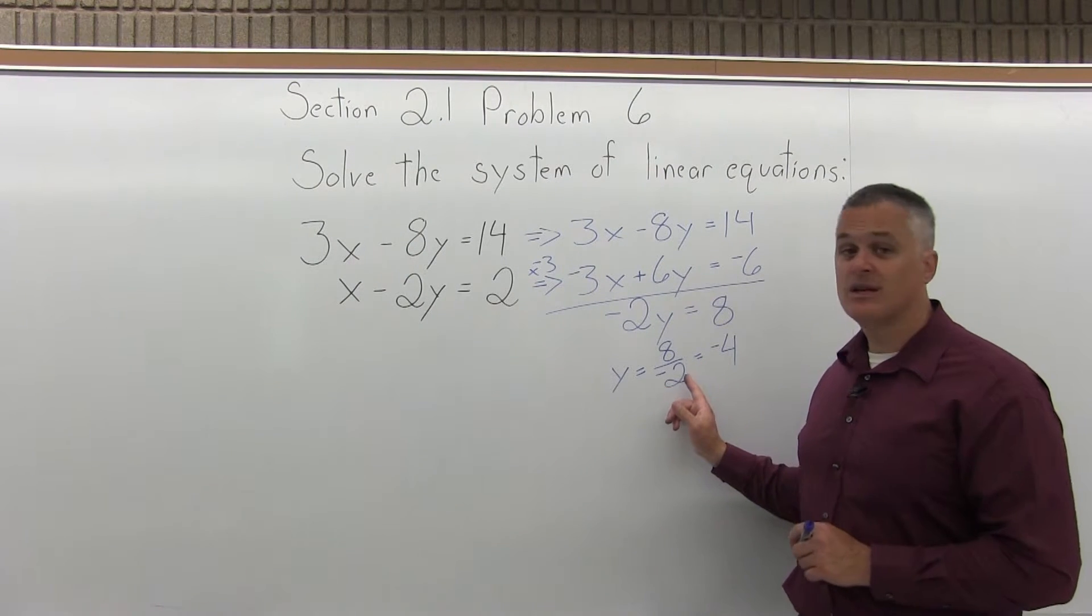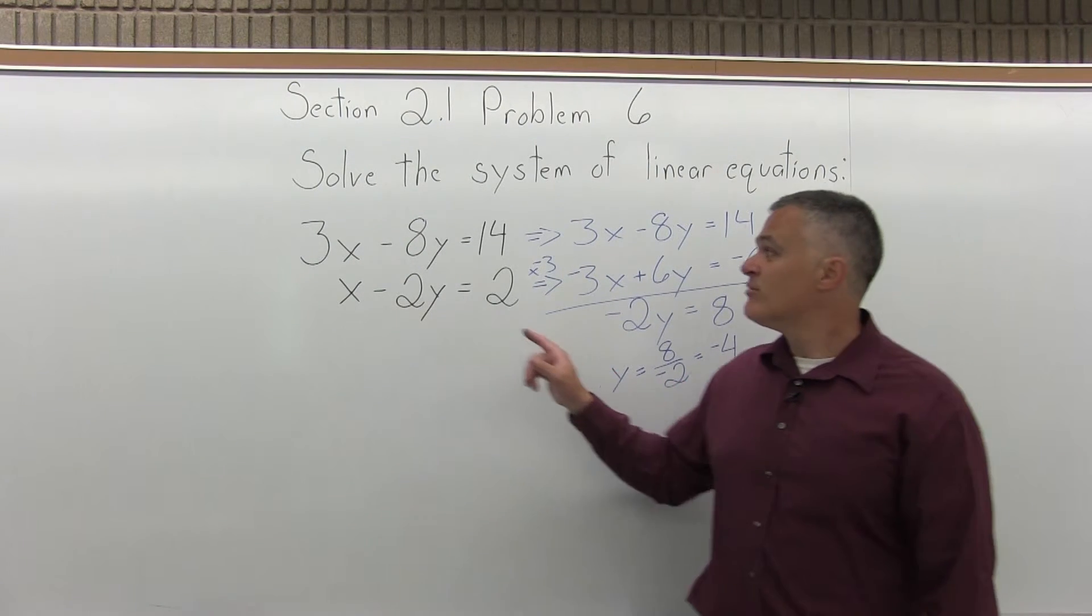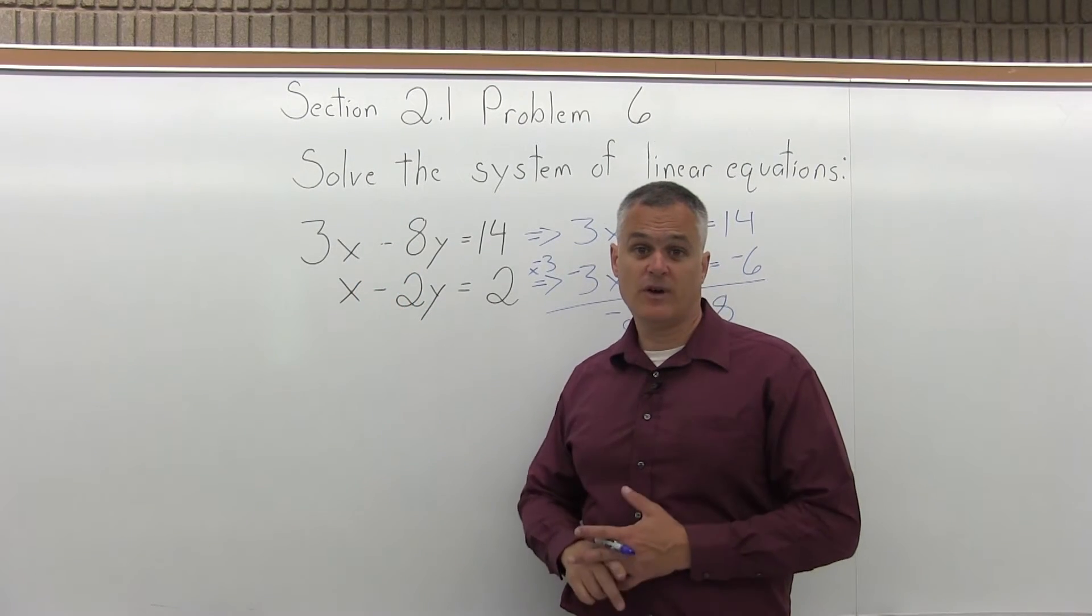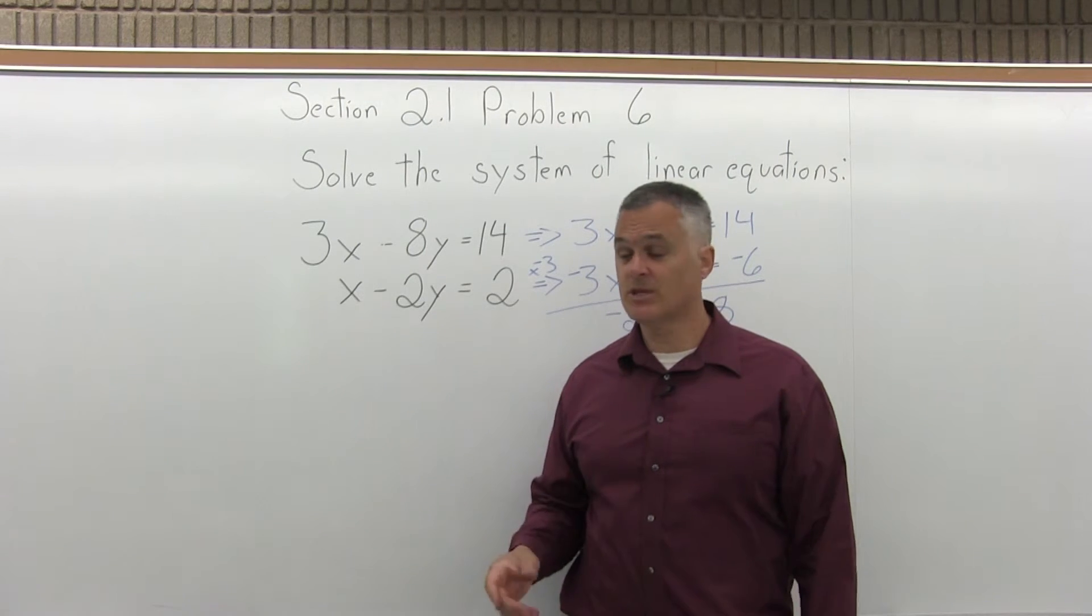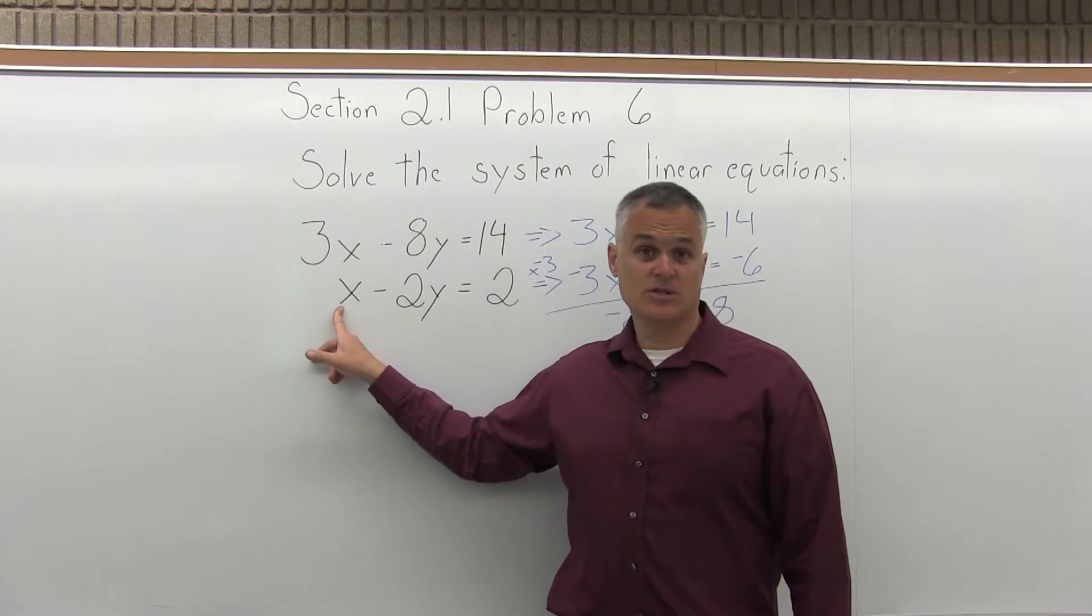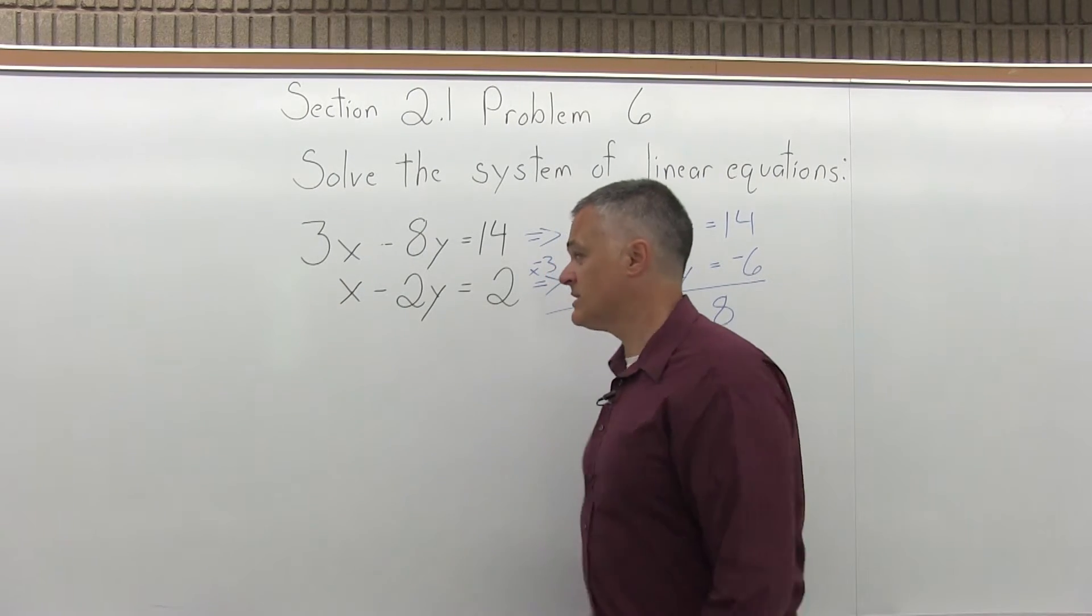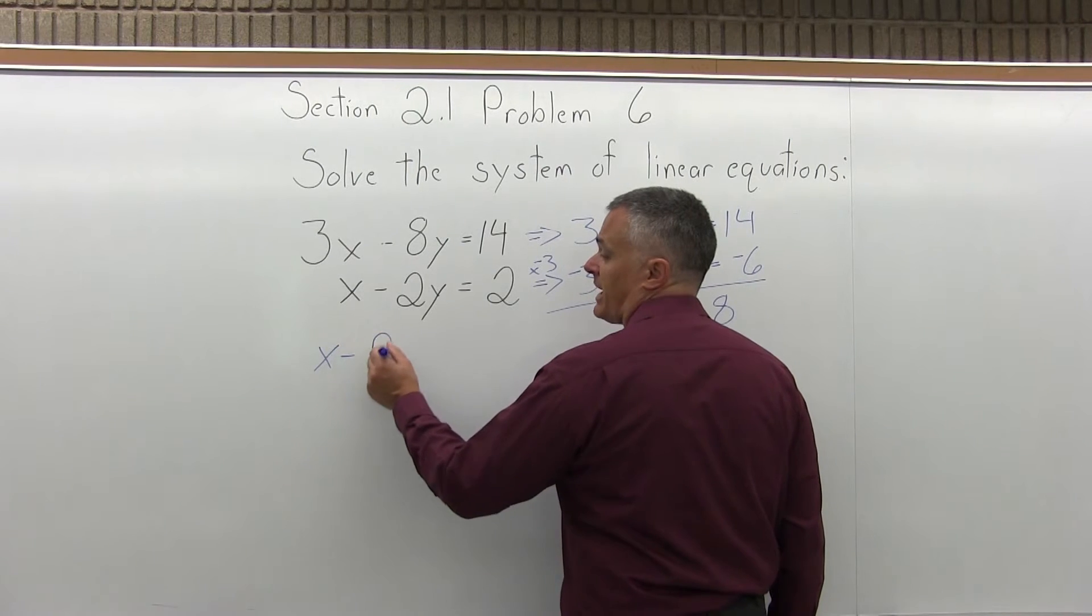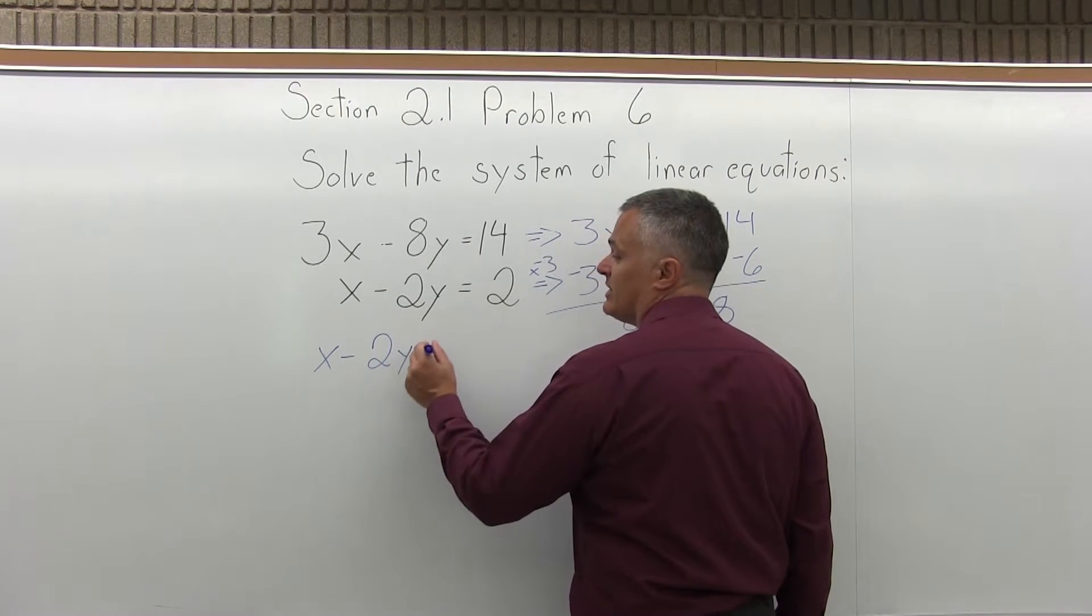Step four, take the answer from step three and plug it back into either of the original equations to solve for the other variable. You can choose either one. You should get the same answer either way. So, pick the one that's easier. To solve for x, it seems easier to deal with the bottom equation. So, for that reason, I'm going to start with the original equation of x minus 2y equals 2.